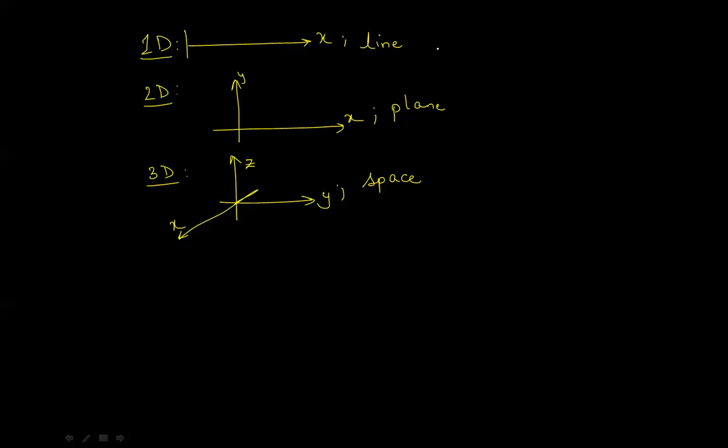So, here, in 1D, we only have the one coordinate to understand, X. Here, we have X and Y. And, in 3D, we have X, Y, and Z.